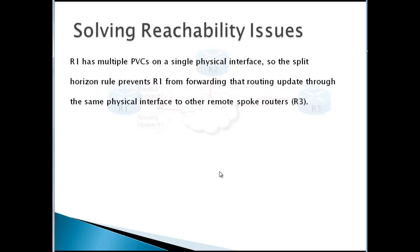R1 has multiple permanent virtual circuits on a single physical interface. The split horizon rule prevents R1 from forwarding routing updates through the same physical interface to other remote spokes. So if R2 receives an update from R1, split horizon will prevent it from sending that update to R3.